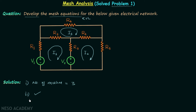We are done with step number two. Now we move on to the third step, which is the last step for this question. In this step we will develop the KVL equations or the mesh equations. We will first develop the KVL equation for mesh number one, starting from this point. Focus carefully on how we develop the equations, because once you have them you can easily solve them.